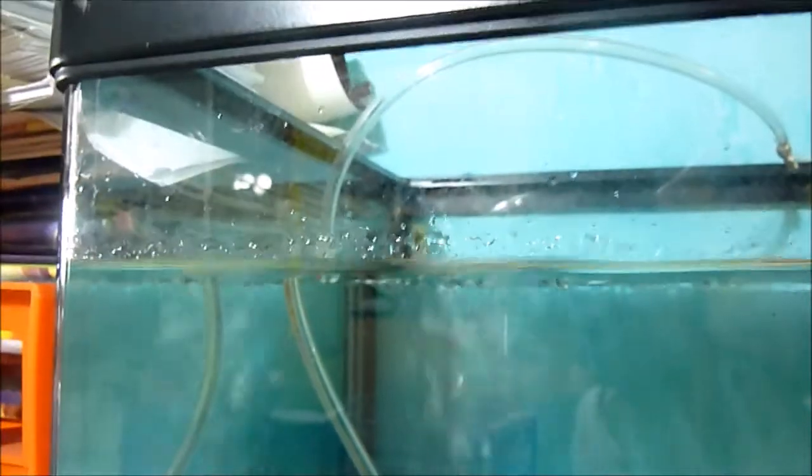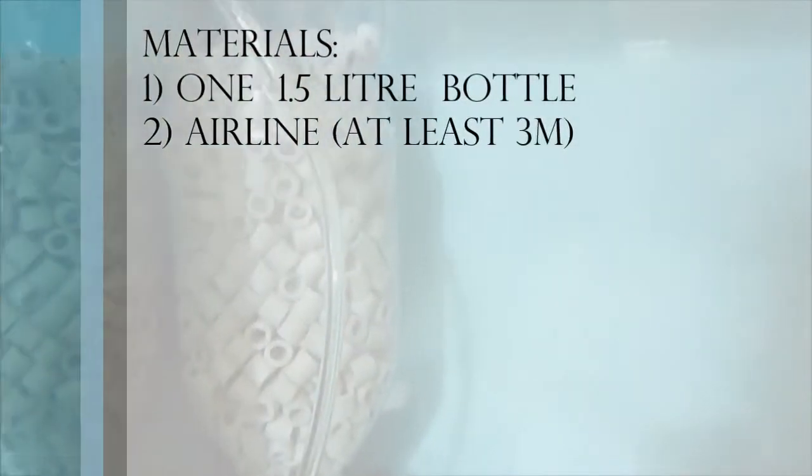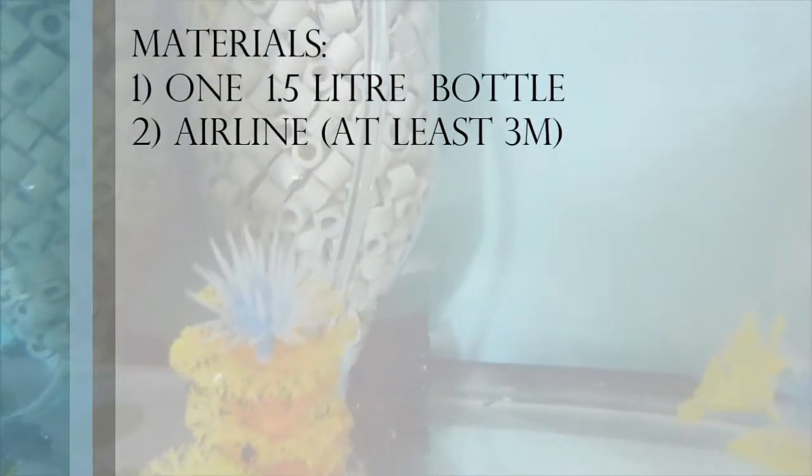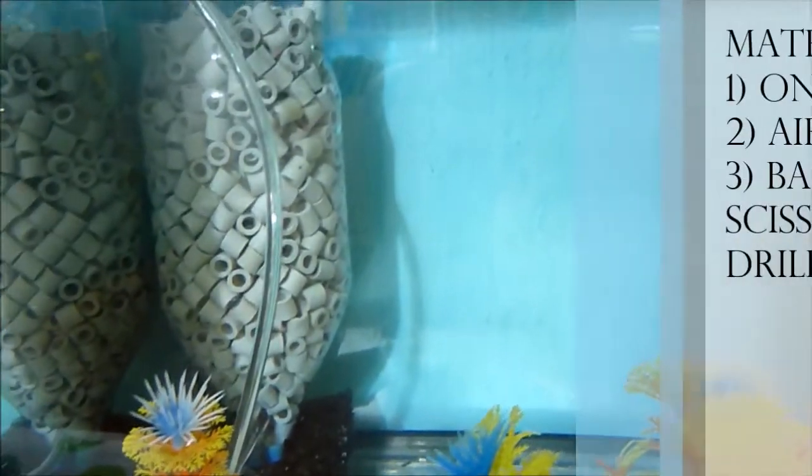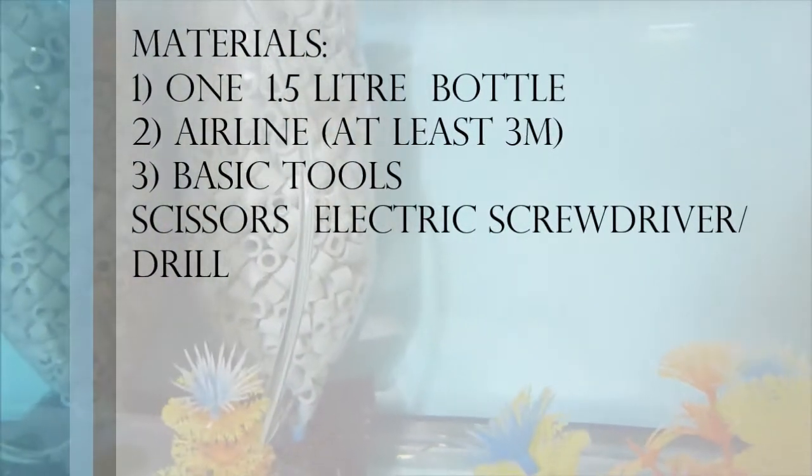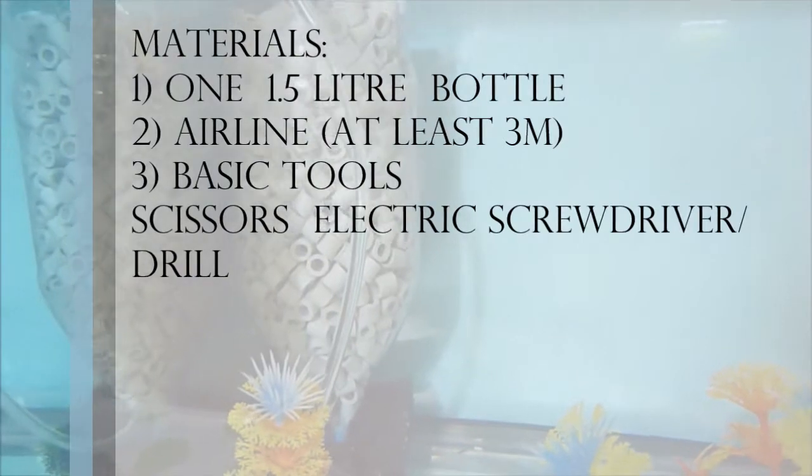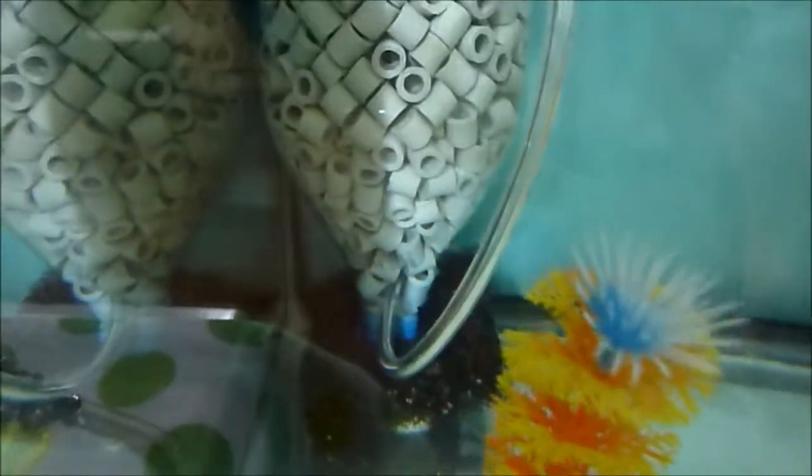The second thing you need is an airline, preferably about 3 meters so you can always cut back. You will need some basic tools like scissors, a coping saw if you have one, an electric screwdriver or a power drill or any tool that can be used to punch holes in plastic to make holes in the bottle and bottle cap.